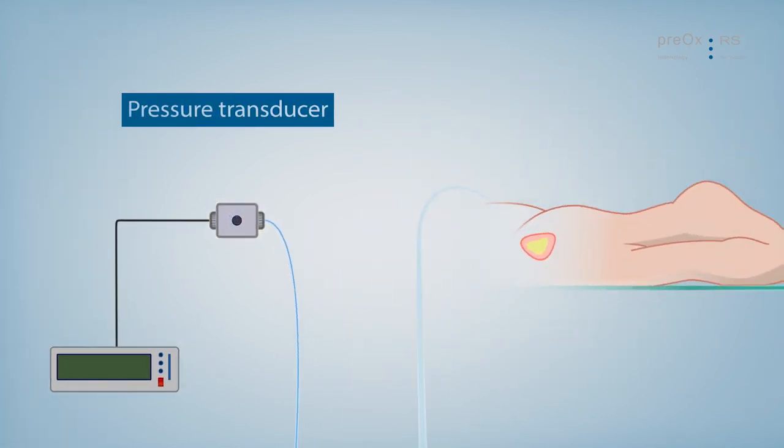Vent the pressure transducer. Level and zero the system to the iliac crest at the mid-axillary line.